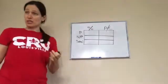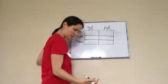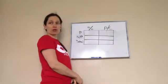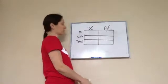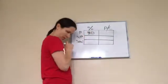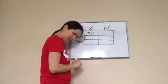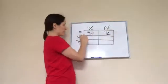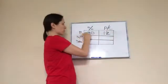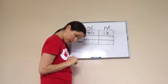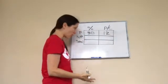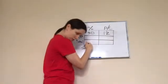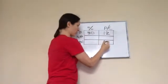Now let's enter in the information that they told us. 30% of the paintings were portraits, so 30 goes in percent under portraits. If there were 12 portraits, 12 goes in actual count under portraits.